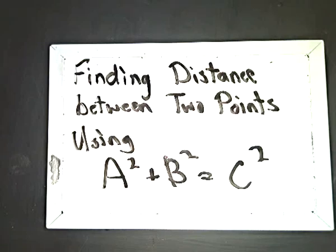Today we're going to talk about how to find the distance between two points using a squared plus b squared equals c squared, better known as the Pythagorean Theorem.